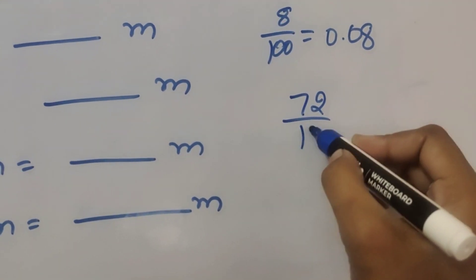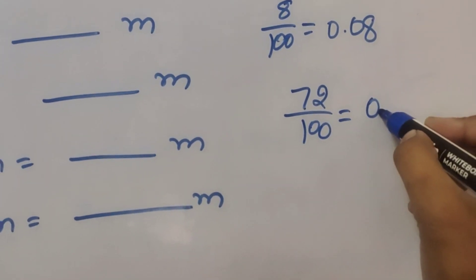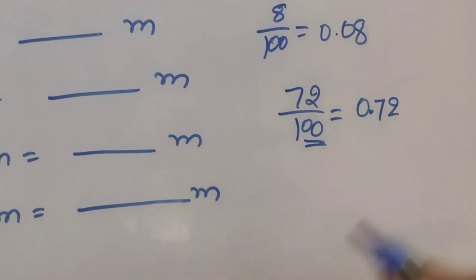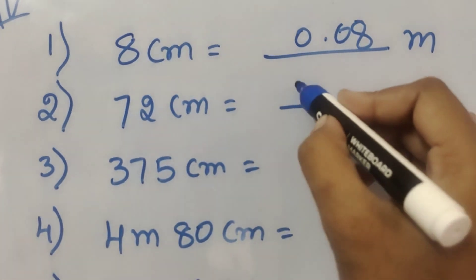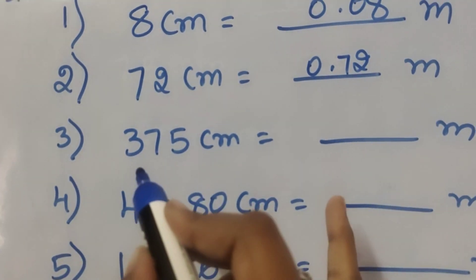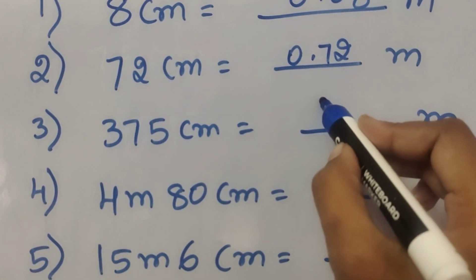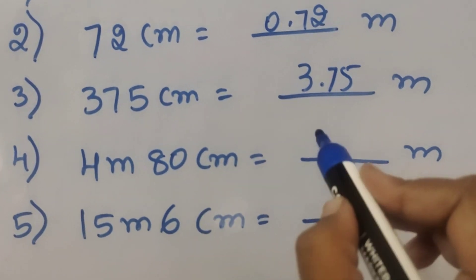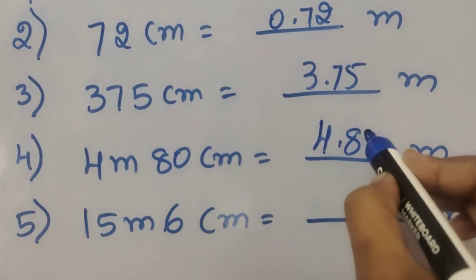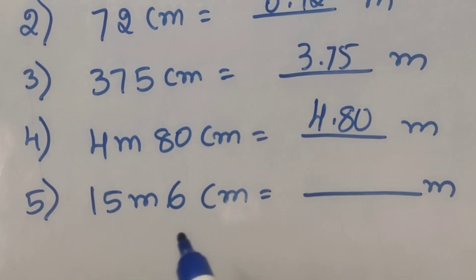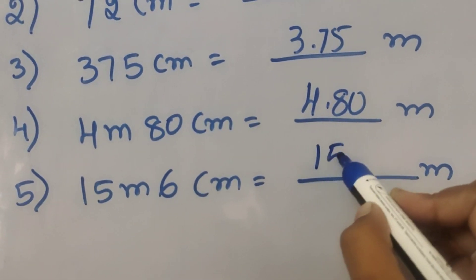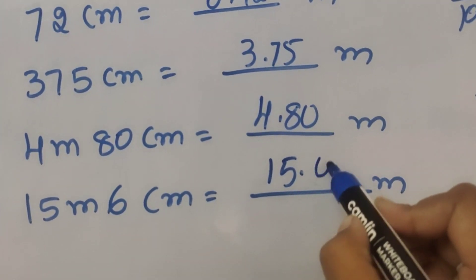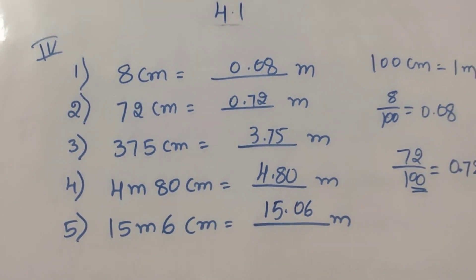Continuing: 280 cm = 2.8 meters. 375 cm = 3.75 meters. Four meters eighty centimeters = 4.80 meters. Fifteen meters six centimeters = 15.06 meters.